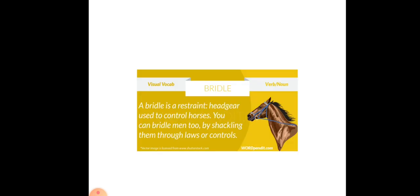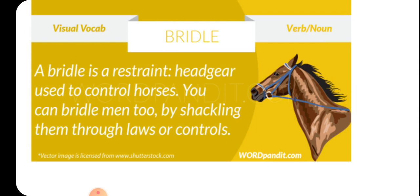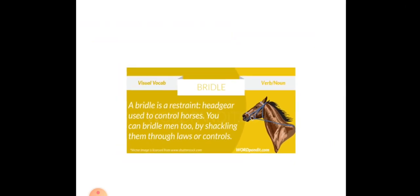When you use 'bridle' as a verb, it means to show that you are annoyed or offended at something. For example: 'She bridled at the suggestion that she was lying' — you are trying to show that you are annoyed or offended at something.